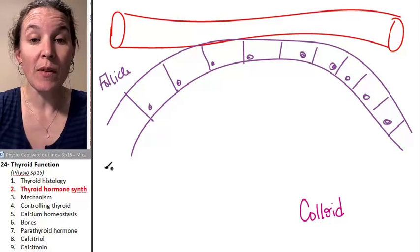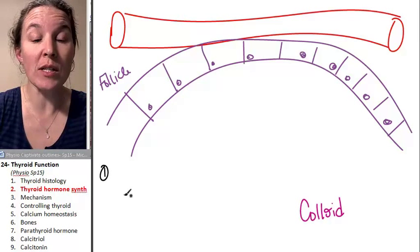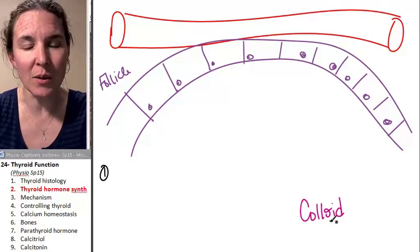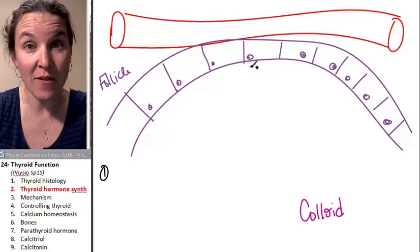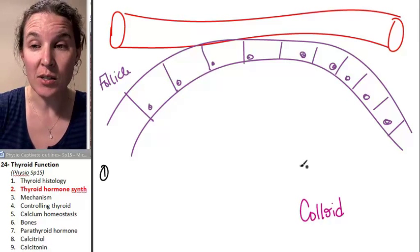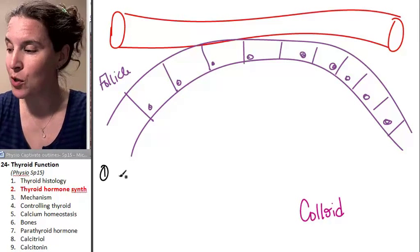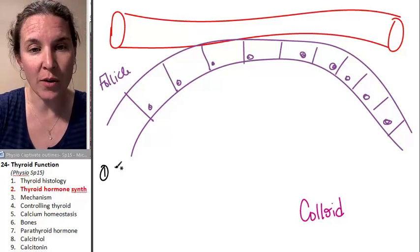So first of all, the thyroid hormone is produced and built in the colloid. But the follicle cells themselves have an important job, and their first job is to produce a substance called thyroglobulin.